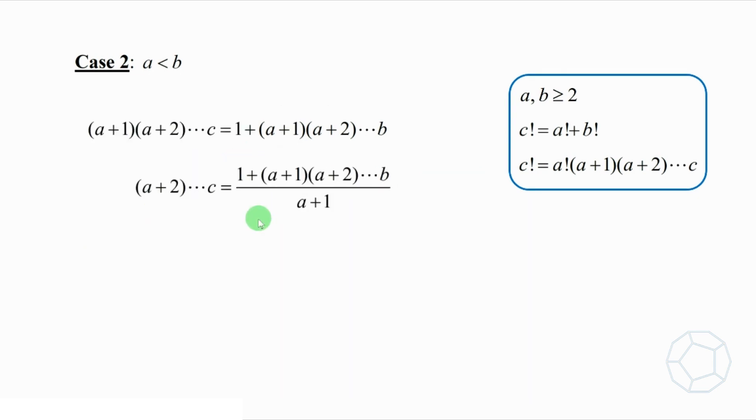Then divide the whole equation by (a+1). We have (a+2) times (a+3) all the way up to c equals [1 plus (a+1) times (a+2) all the way up to b] all over (a+1). Separate the two terms on the right-hand side to get 1 over (a+1) plus (a+2) times (a+3) all the way up to b.